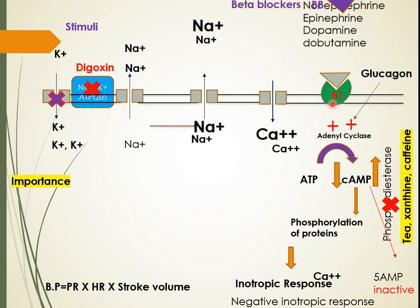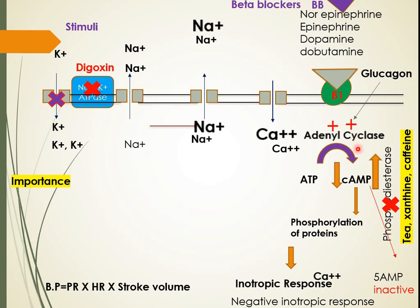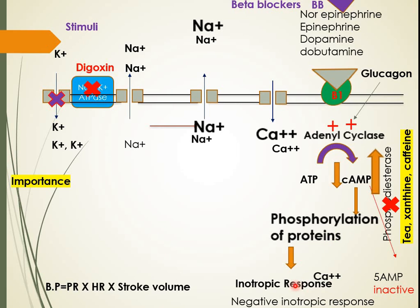Inotropic drugs like norepinephrine, epinephrine, dopamine, and dobutamine attach to beta-1 receptors on the myocardium. They stimulate the adenylyl cyclase system, which is a secondary messenger system. Consequently, ATP is converted into cyclic AMP, its levels rise, and this increases protein phosphorylation, producing a positive inotropic response.